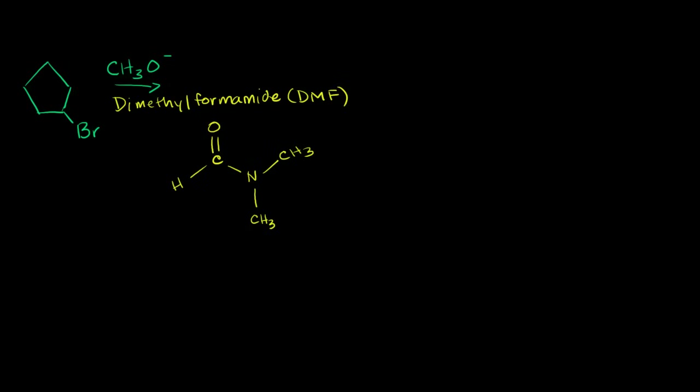What I want to do in this video is to try to figure out what type of reaction or reactions might occur if we have — this is 1, 2, 3, 4, 5, it's in a cycle — this is bromocyclopentane.